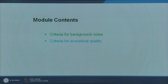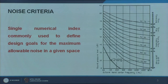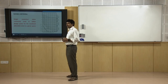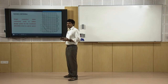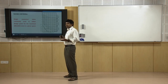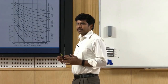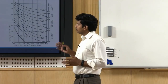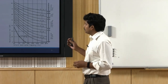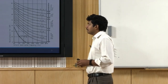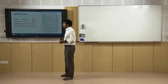The second part will cover further indices. To start with background noise levels: how do you define background noise level? In one of the last modules we looked at environmental noise levels where we talked about L-equivalent and how these limits are defined. In case of indoor noise levels, we define them in terms of one of the basic indicators, which is noise criteria, commonly referred to as NC.